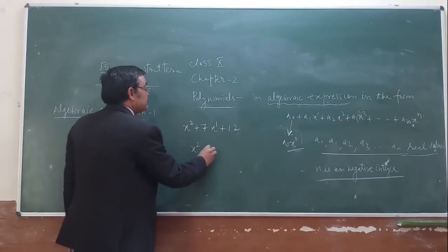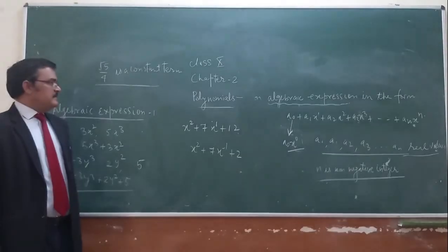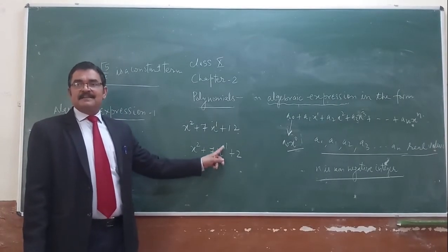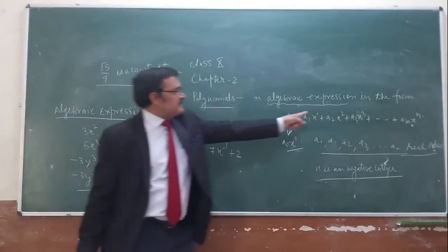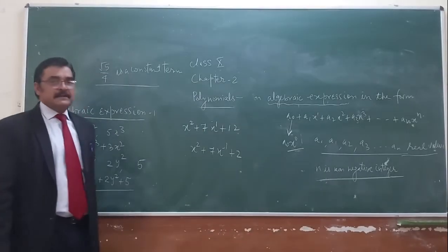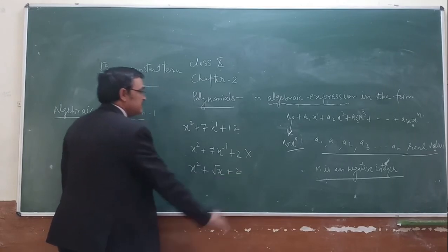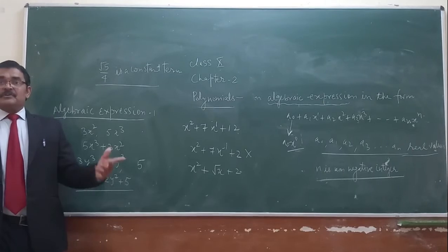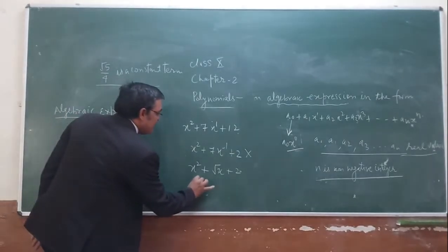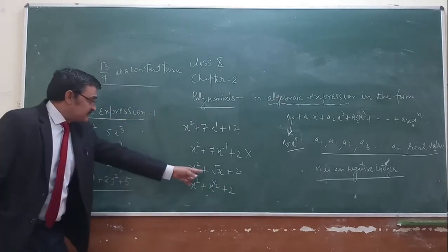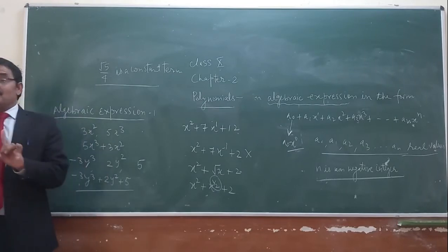If I write x² + 7x⁻¹ + 2, the power is negative, so it is not a polynomial. If I write x² + √x + 2, that is x² + x^(1/2) + 2, and 1/2 is a fraction — so it is not a polynomial, because powers must be non-negative integers.